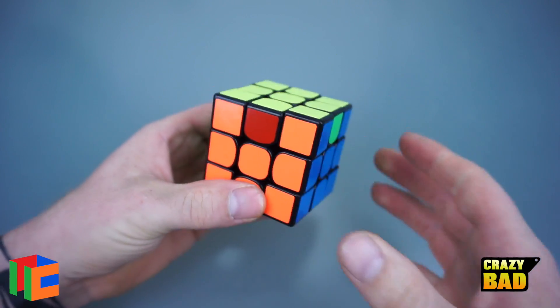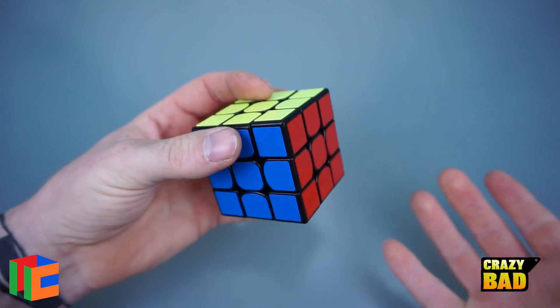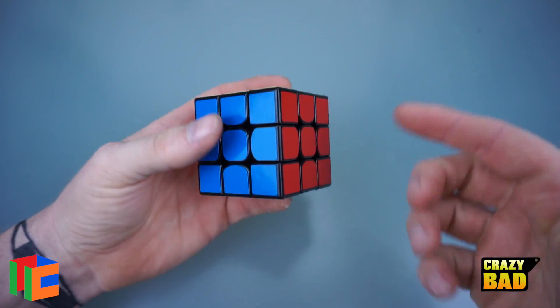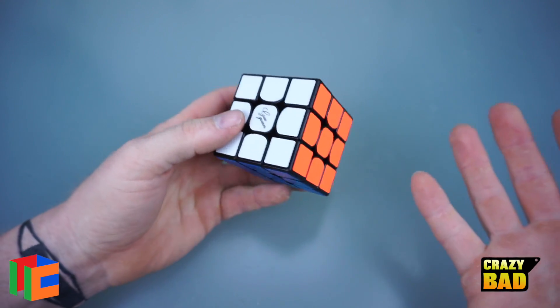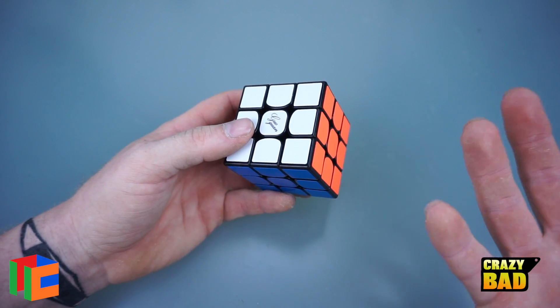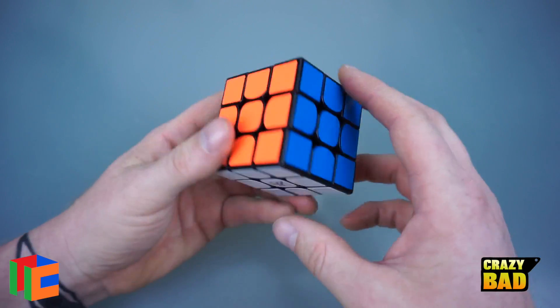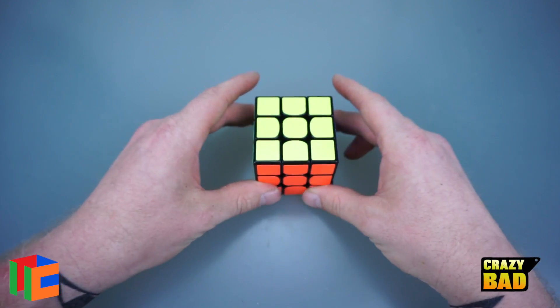But I do like this cube, and if you want it you can follow the link at the top of the description. It's definitely not gonna be my main though. If you want to check out a really good one, check out the Gans 3, the premium one made by the Cubicle. Wow, that is amazing. Anyways, thanks for watching guys, and I'll see you on my next video.